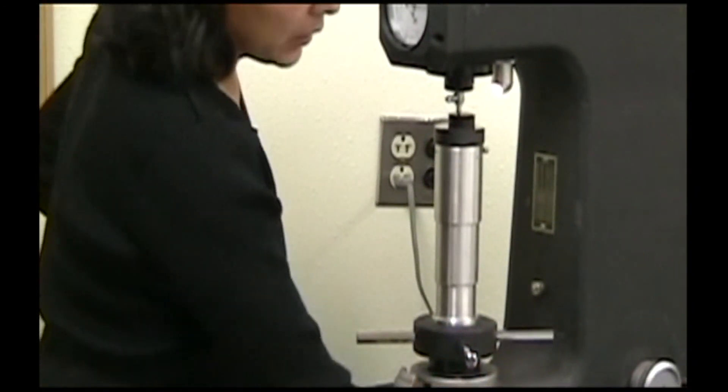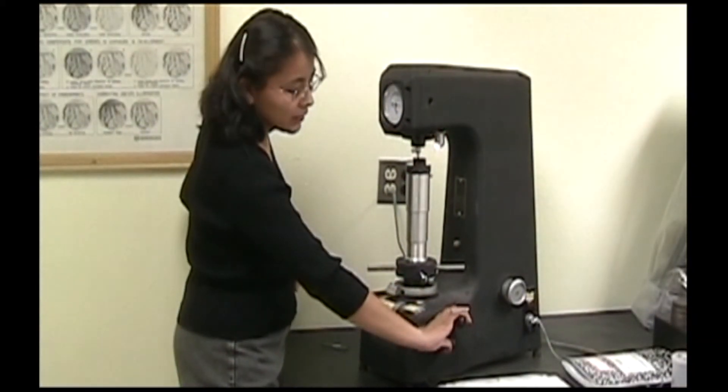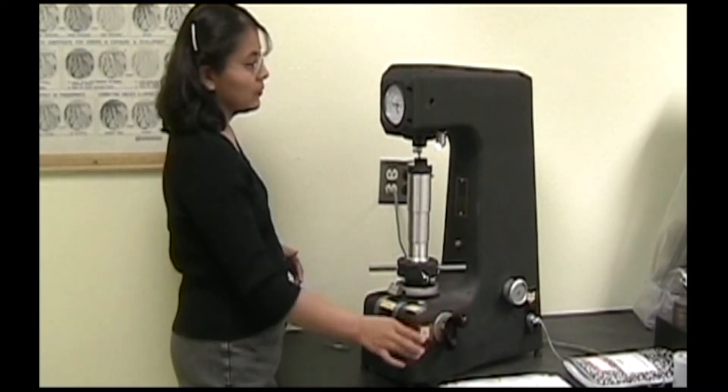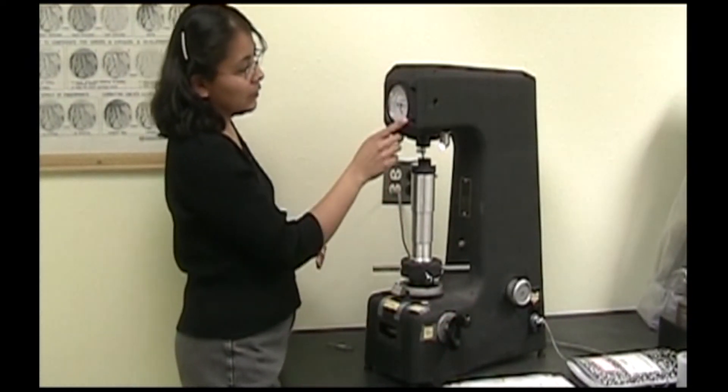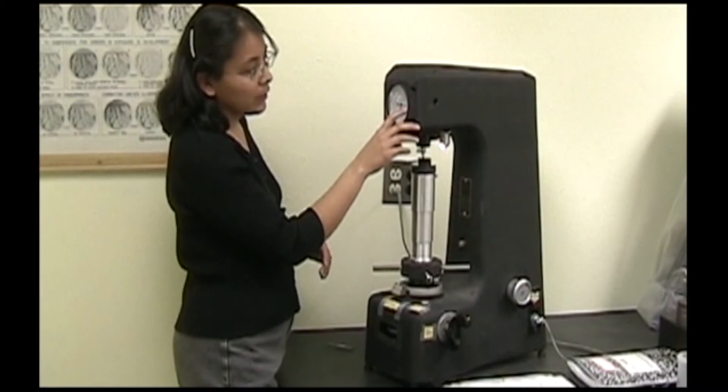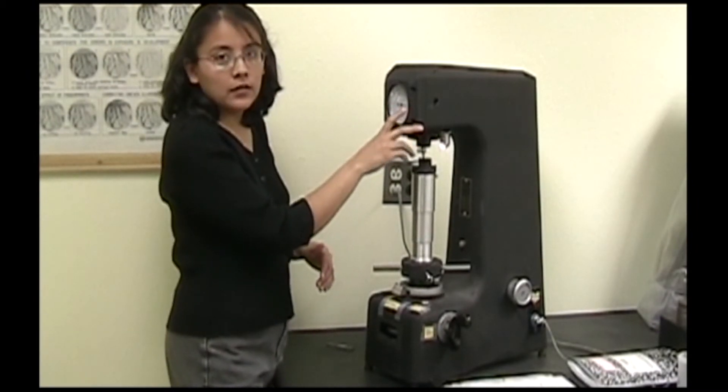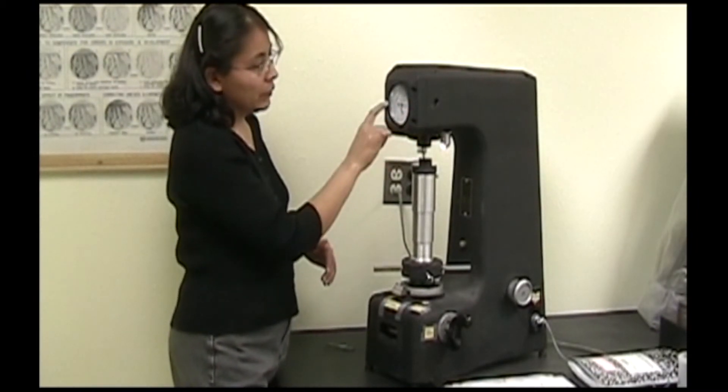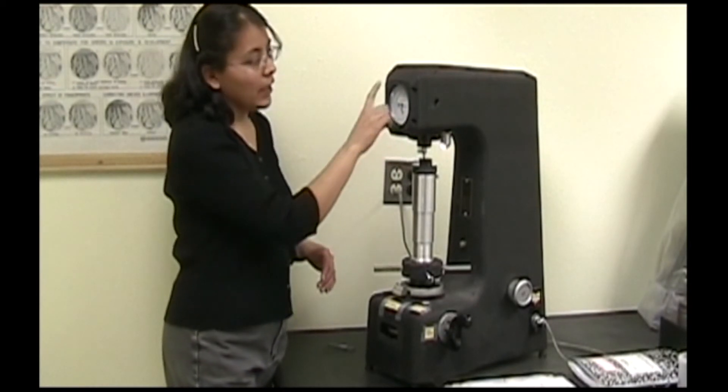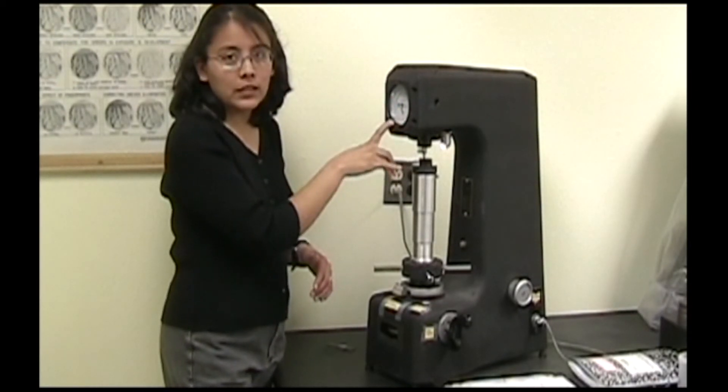...you will release the major load by pressing here on this black handle. And the needle has moved again, but this time it's pointing at a hardness value. You read the red numbers for Rockwell B scale and the black numbers for Rockwell C scale hardness.